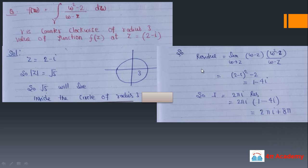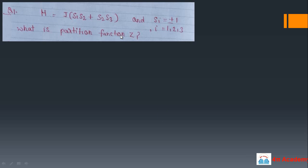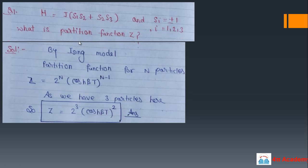The second problem is also a 5-mark question. The Hamiltonian of a system is J(s1·s2 + s2·s3), where si = ±1 represents the spin, and you have three particles with spins s1, s2, s3. You have to calculate the partition function. One approach is to use the Ising model, which commonly appears in these exams.